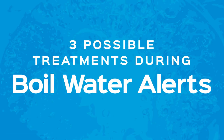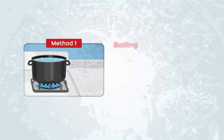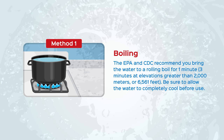Three possible treatments during boil water alerts. Method one is boiling. The EPA and CDC recommend you bring the water to a rolling boil for one minute, or three minutes at elevations greater than 2,000 meters or 6,561 feet. Be sure to allow the water to completely cool before use.